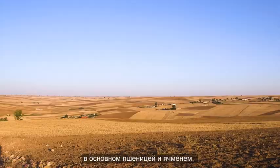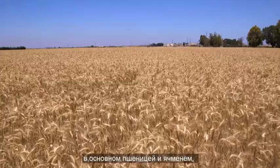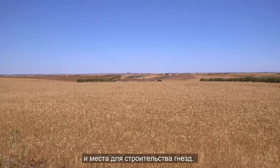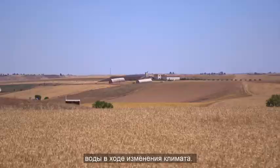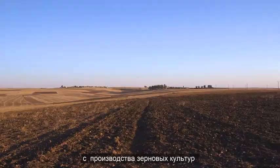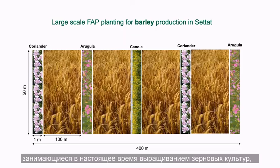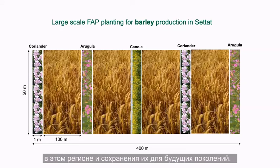Here in Settat, farmers grow mainly wheat and barley, which makes the situation difficult for pollinators. Wild pollinators depend on a small radius — 50 to 2,000 meters — and here they will not find nectar resources, pollen, or nesting sites. The Moroccan government expects that water scarcity will increase with climate change, so farmers might decide to shift from cereals to vegetables or fruits, which give higher revenue per drop. Therefore, if cereal farmers would seed every 100 or 150 meters with coriander, sunflower, or canola to sustain pollinators, they would keep options open for the next generation.